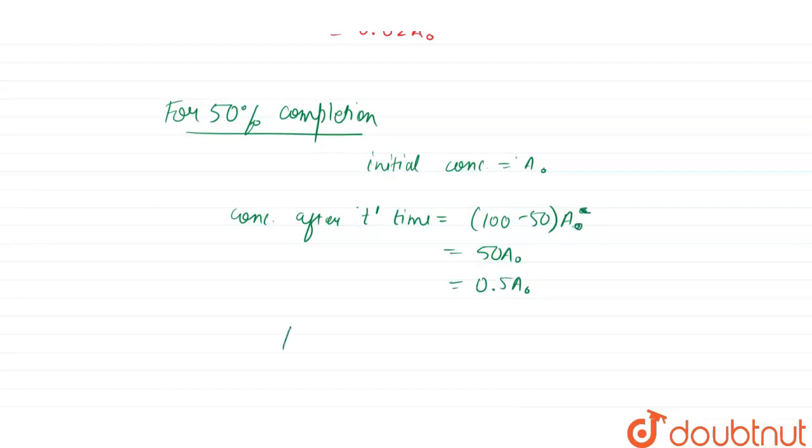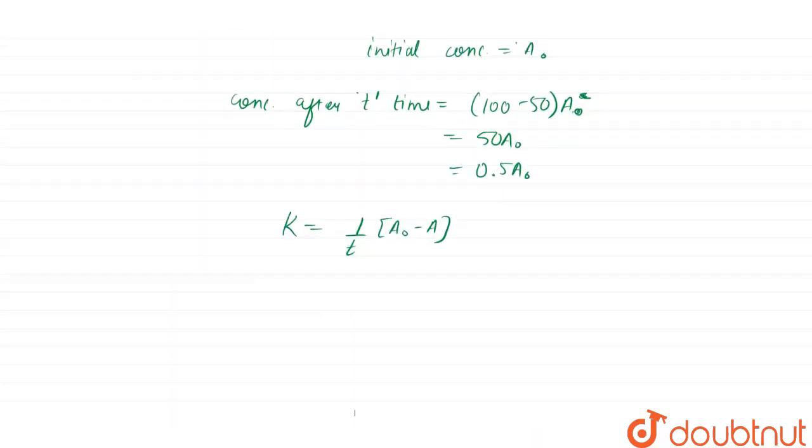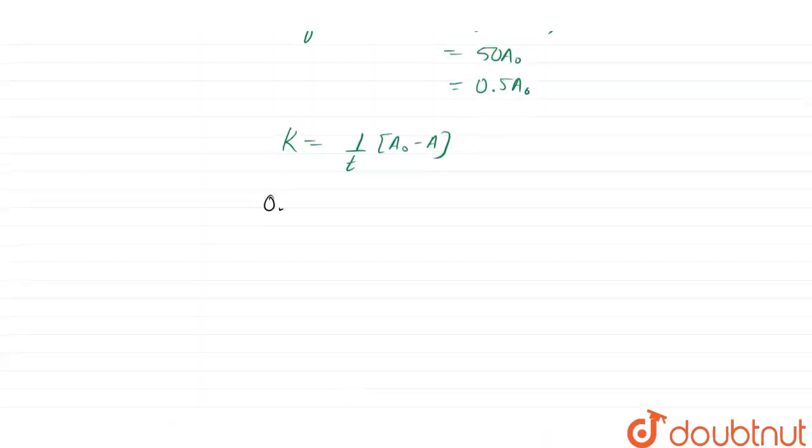Now we can again put the formula of zero order kinetics, that is A₀ minus A. The K we have calculated here, that is 0.02. So it will be 0.02 A₀ equals 1 by T dash, because it was after time T dash.